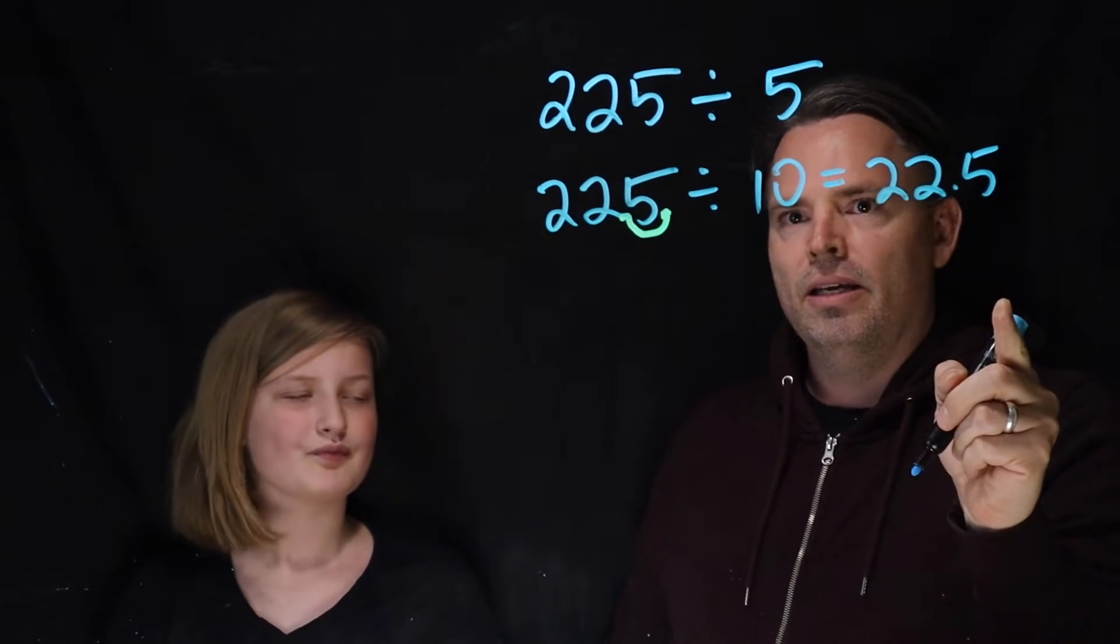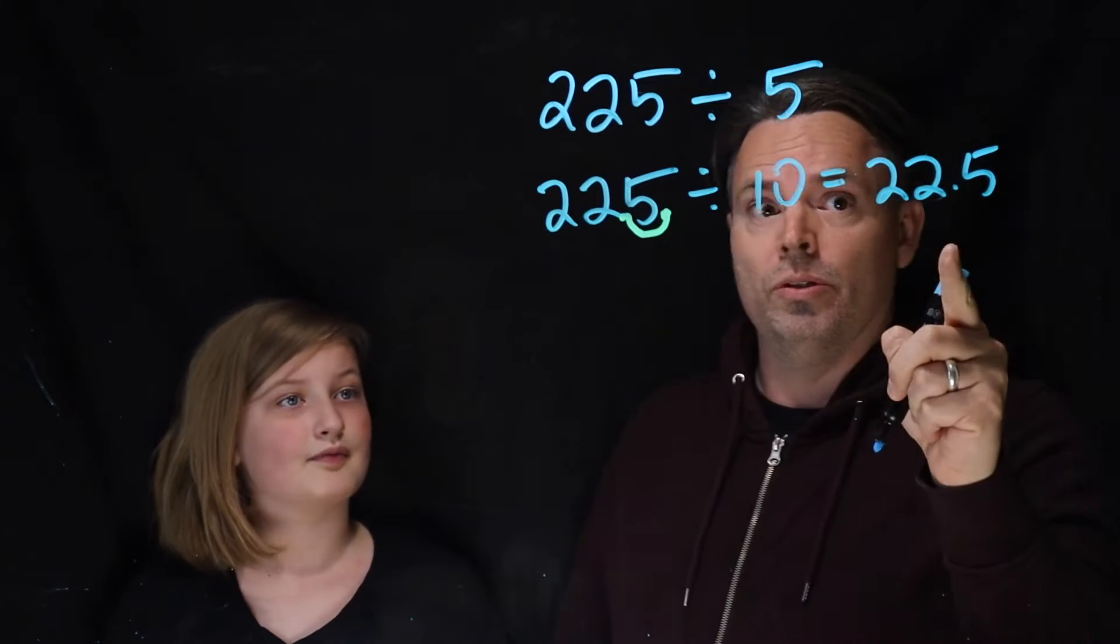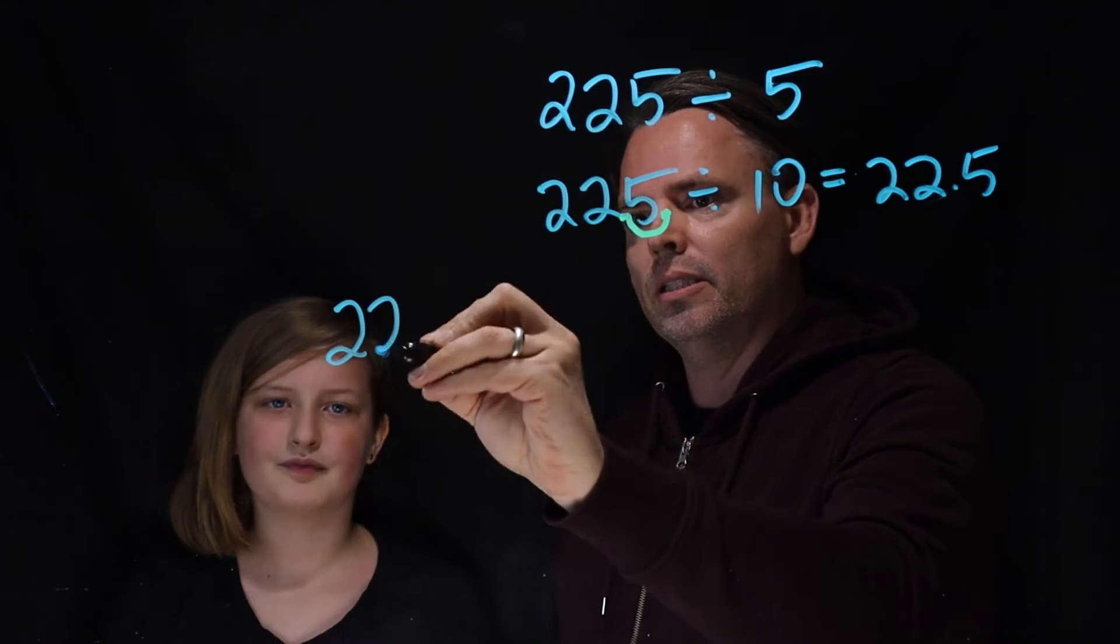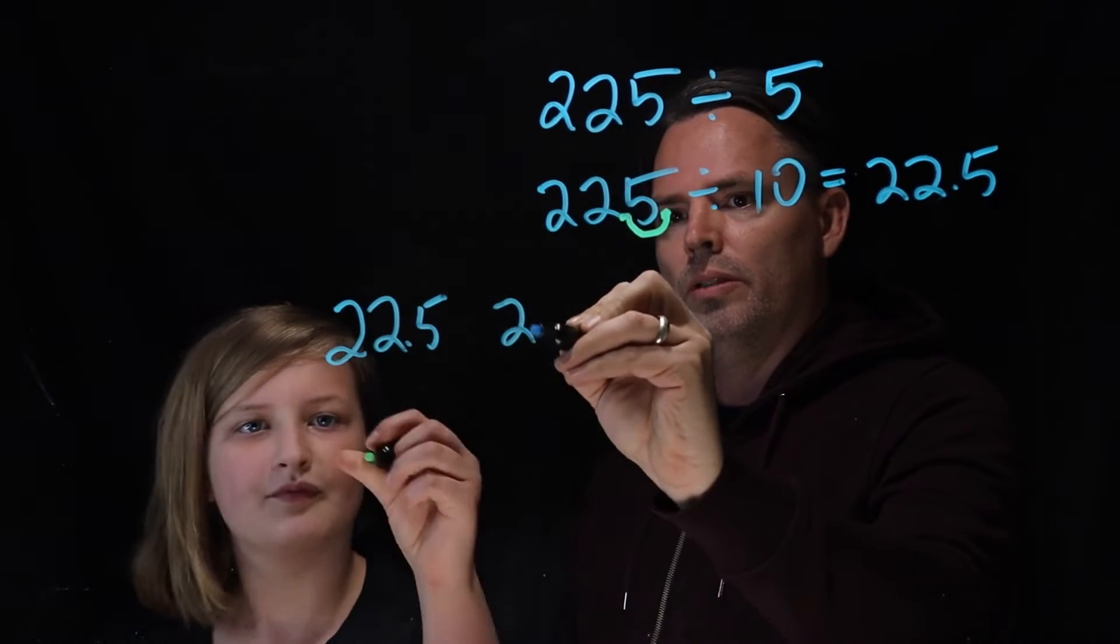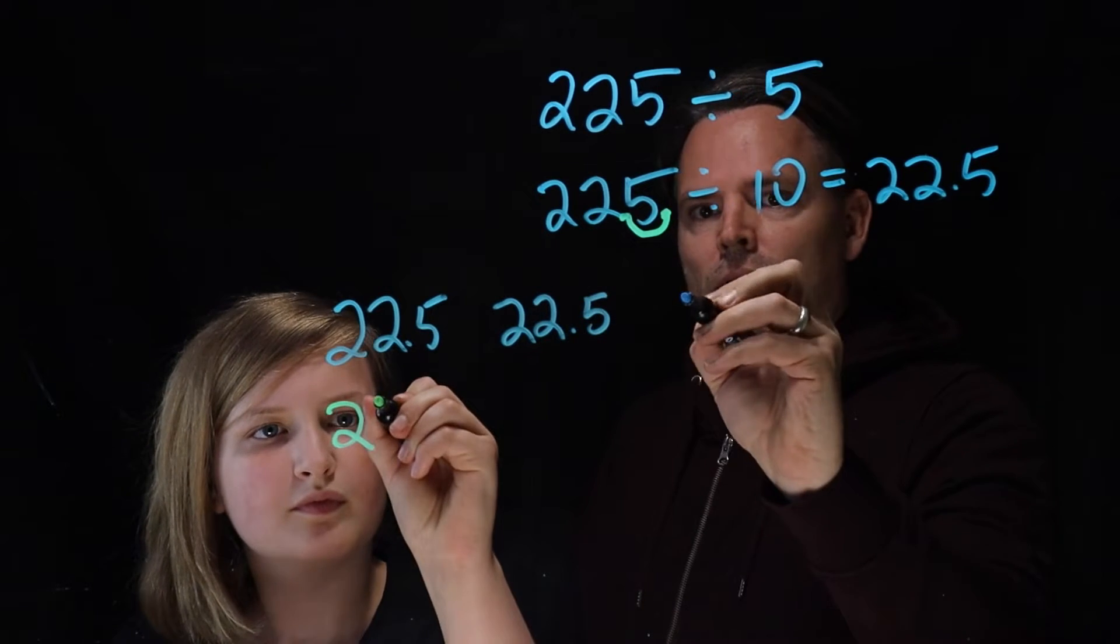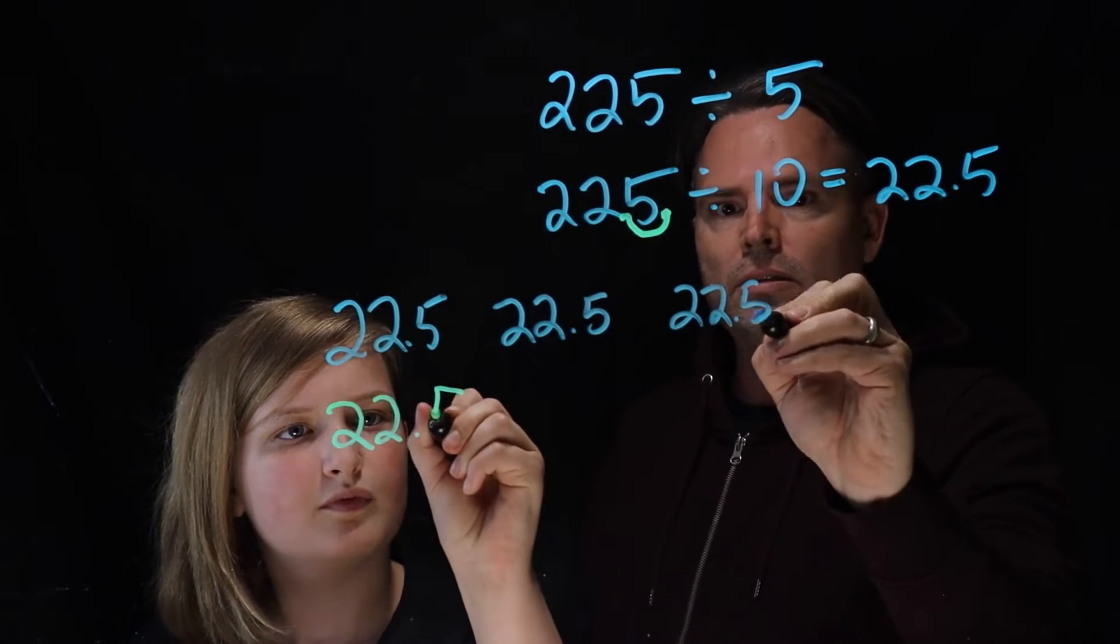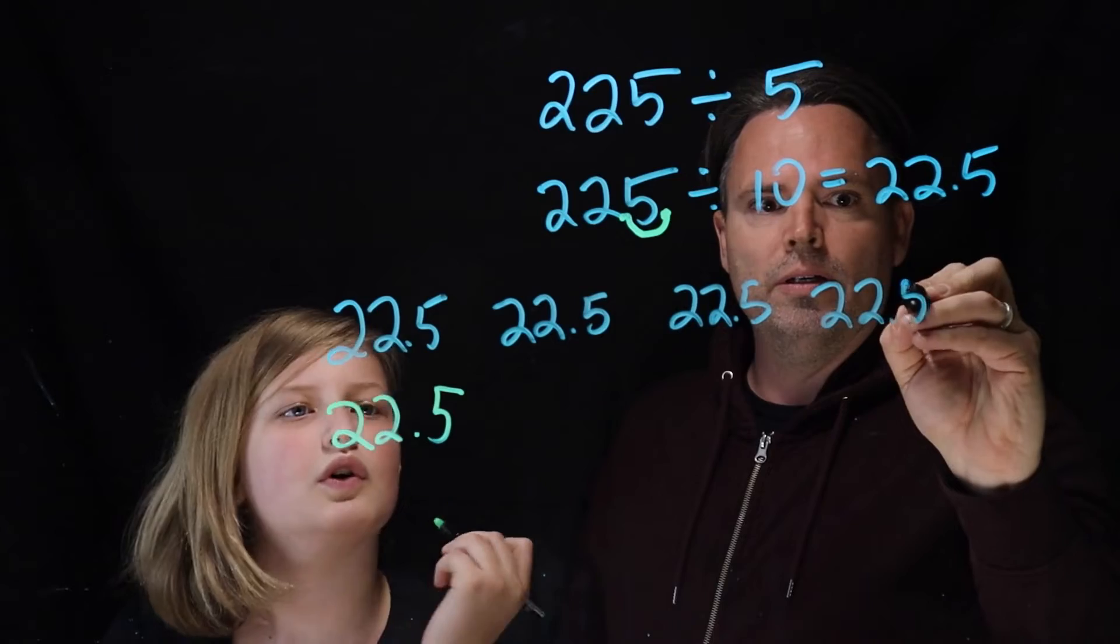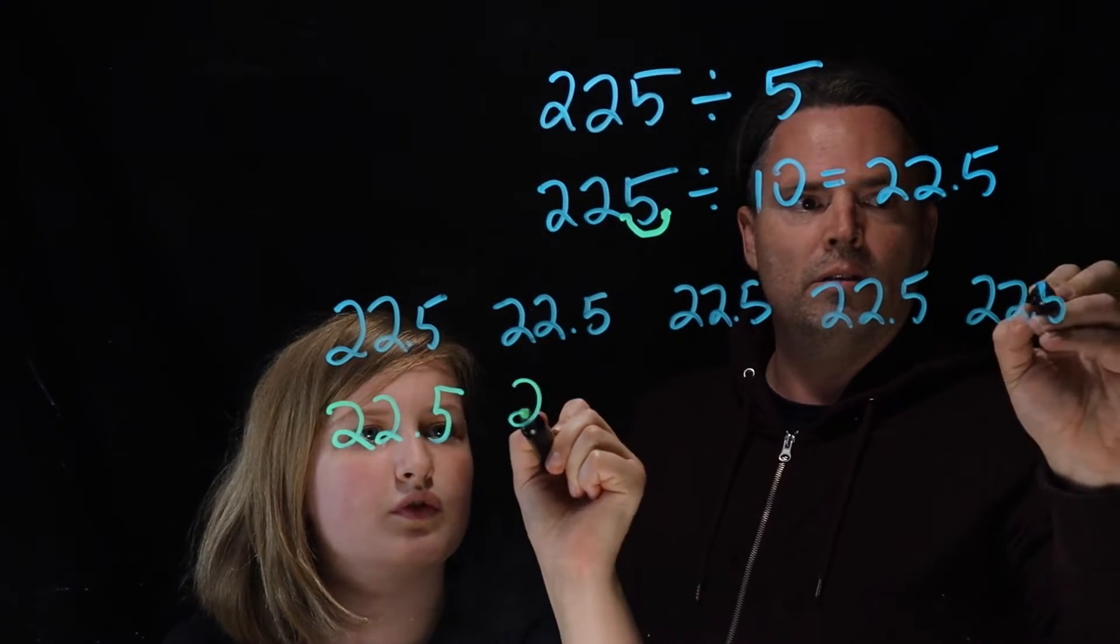Okay, so you know that's easier, so you divide by 10. So then we've got 10 groups of 22.5, so let's get those out because that's a good idea. So one, two, three, four, five...